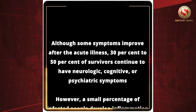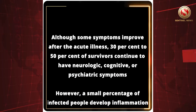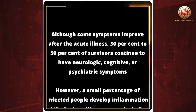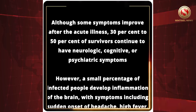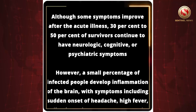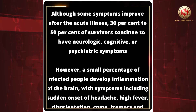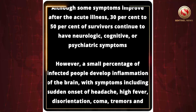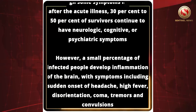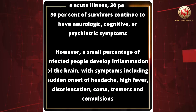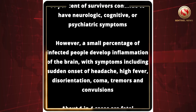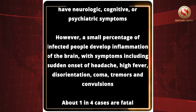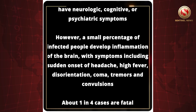Although some symptoms improve after the acute illness, 30% to 50% of survivors continue to have neurologic, cognitive or psychiatric symptoms. However, a small percentage of infected people develop inflammation of the brain, with symptoms including sudden onset of headache, high fever, disorientation, coma, tremors and convulsions. About 1 in 4 cases are fatal.